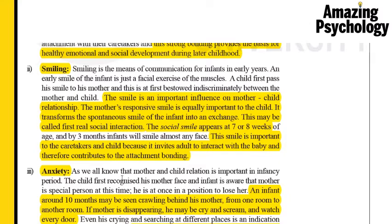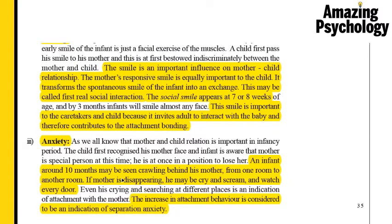The next social behaviour is anxiety. Around 10 months, if the mother is not seen anywhere close by, the child will go searching for her — crawling around and going into different rooms. If the child is not able to find her, he starts crying or screaming. This shows a sense of anxiety because the child senses separation from the mother. It is another form of attachment behaviour where the child shows anxiety because it is not able to find its mother.